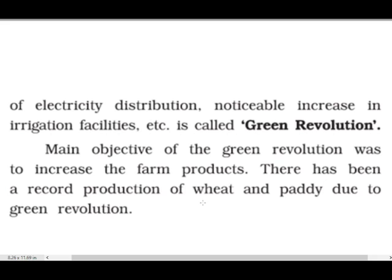Is tariqe se jab kheti mein development aane lagi — achi quality ke beej, achi quality ke fertilizers, electricity ke zariye machinon se fasal ko jotna, mitti ko soft karna, harvest karna, aur achi irrigation facility provide karna — to ye sab badlaao Green Revolution ke tahat hote hain.